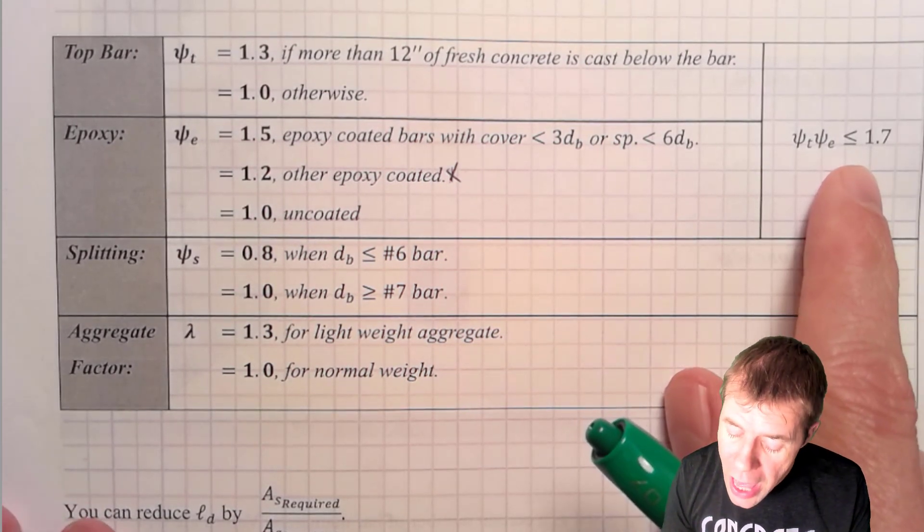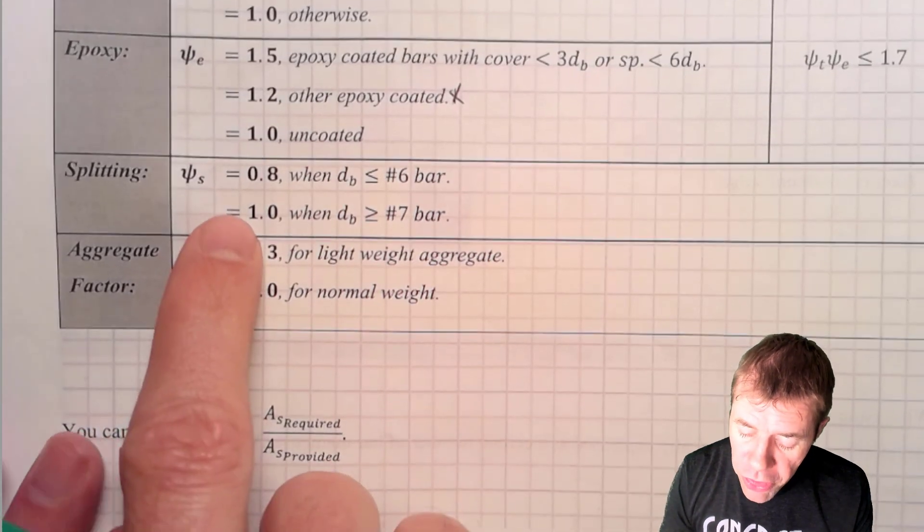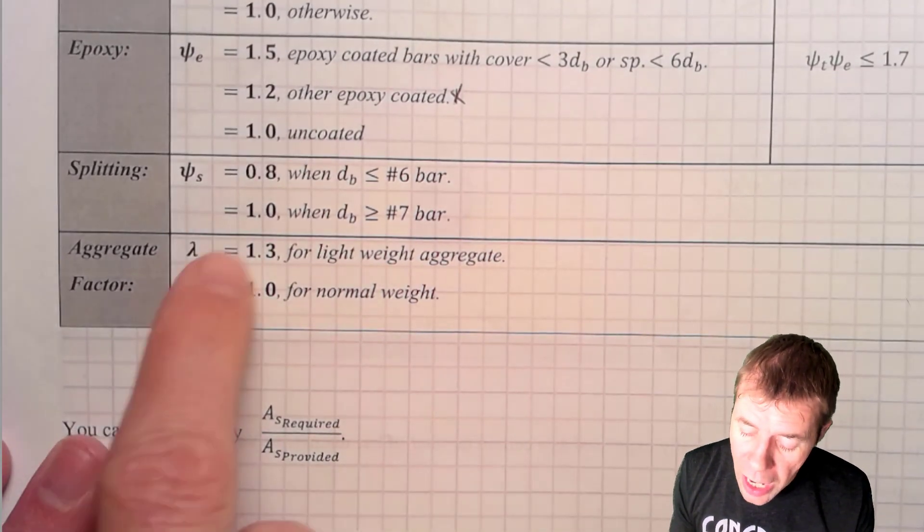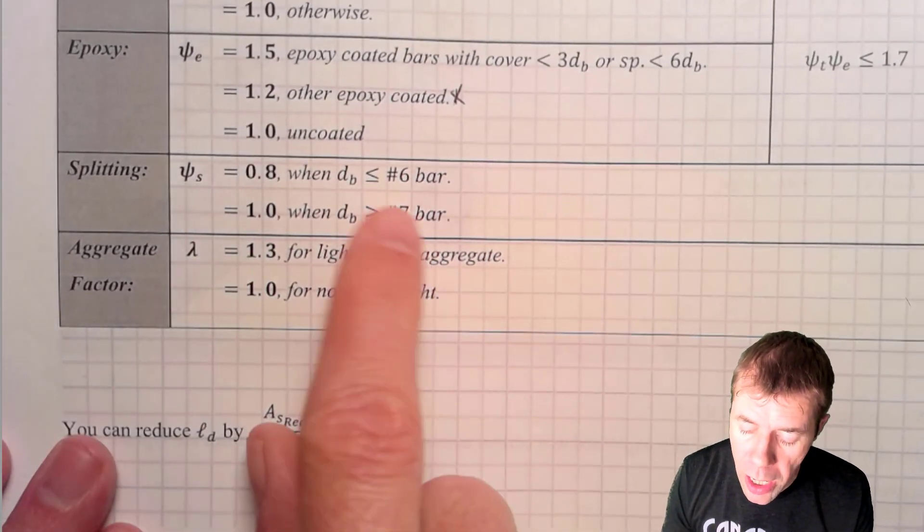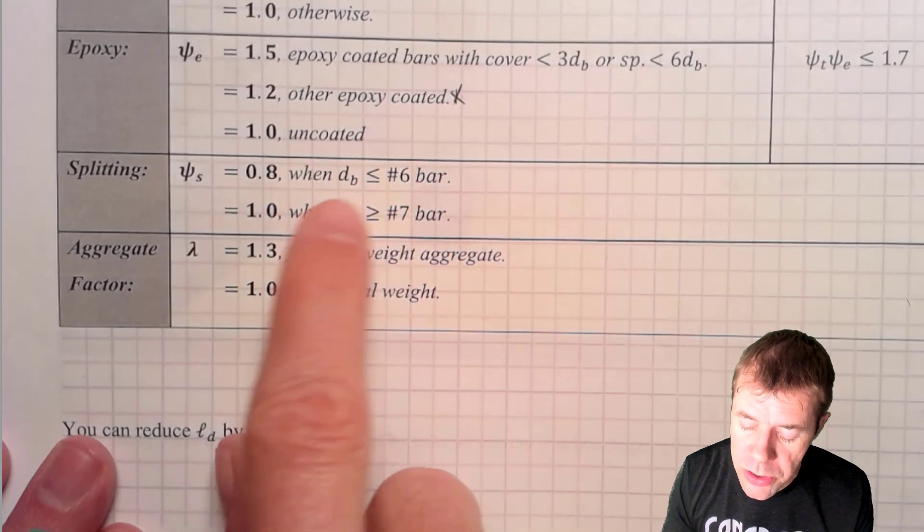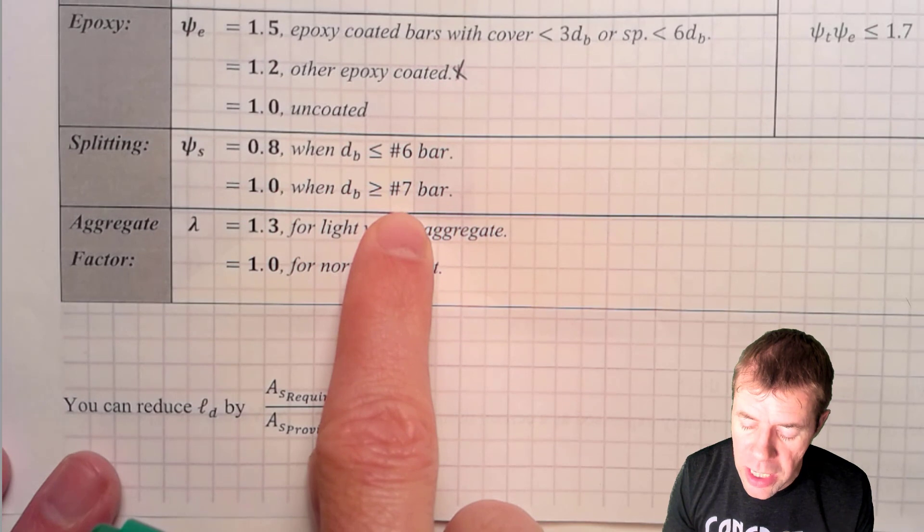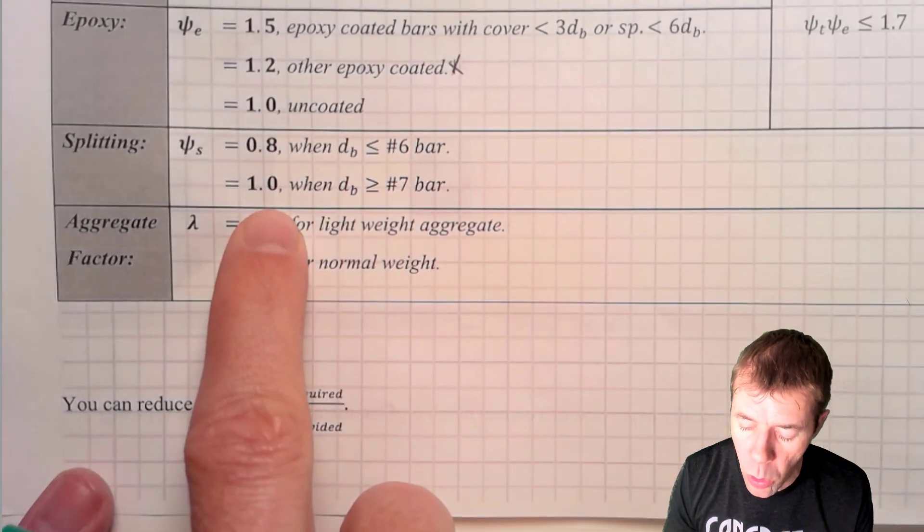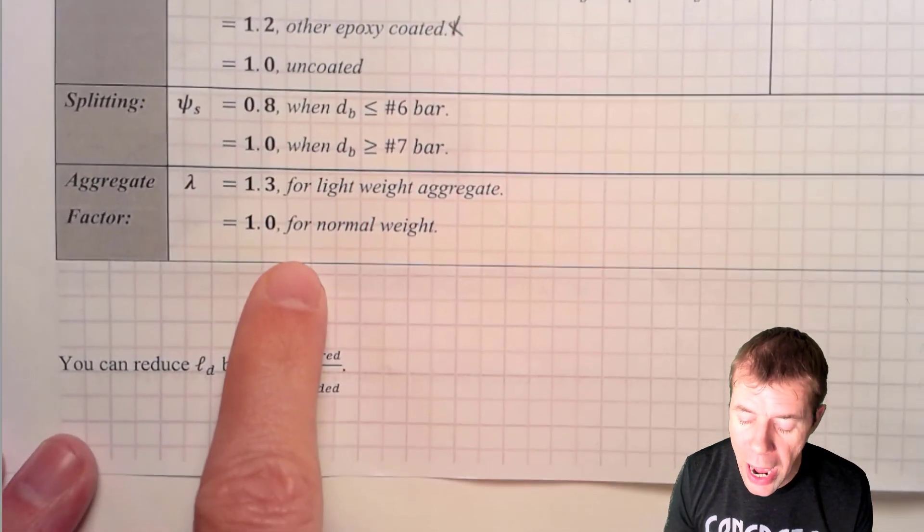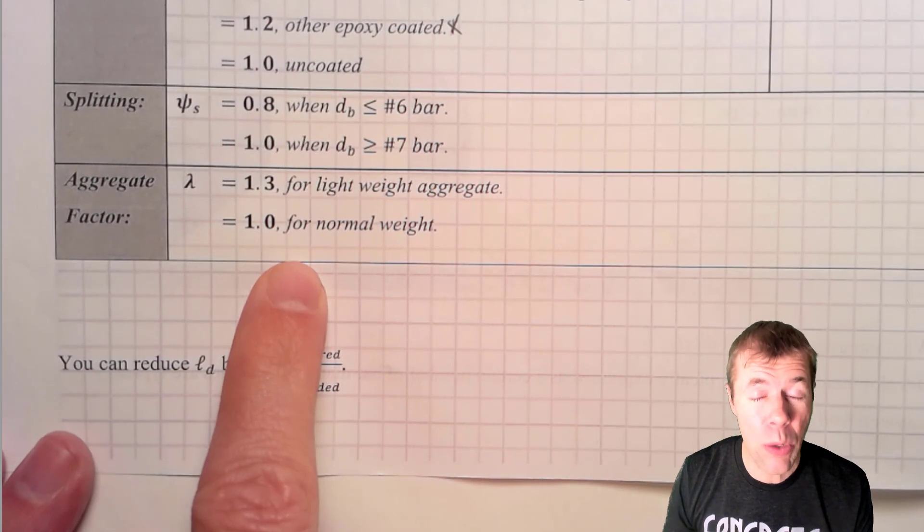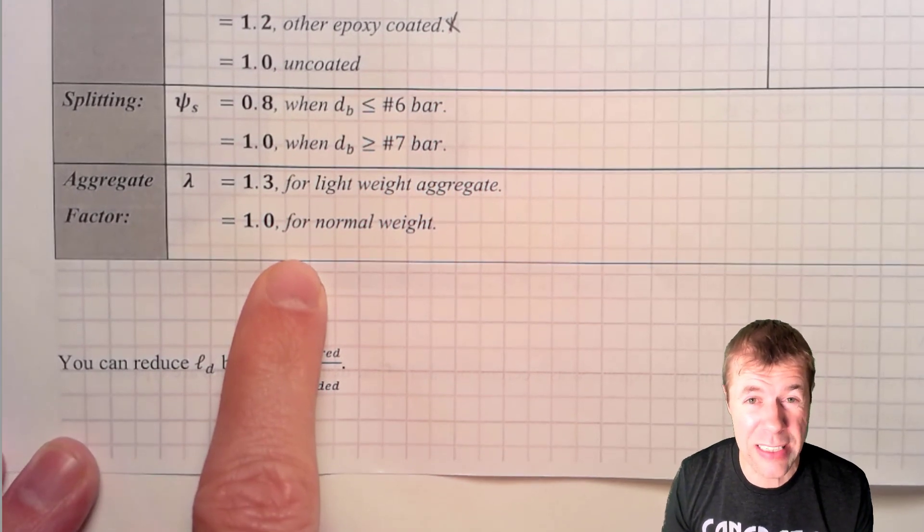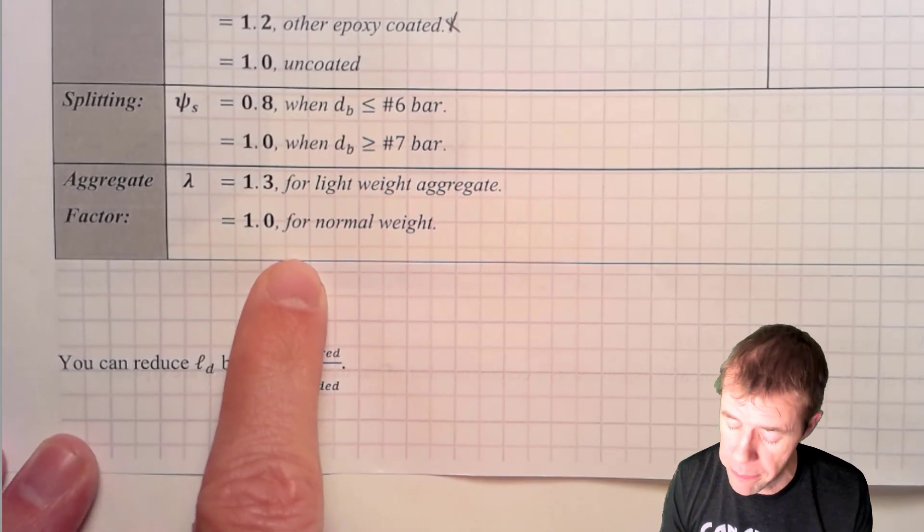And then, again, we have our splitting thing. This psi is about how large our diameter of our bar is. If we have a smaller size bar, we can use 0.8. If we have a larger bar than a number 7 or larger, then I can use a 1. And if I am using an aggregate that is a lightweight aggregate, I use a lambda of 1.3.